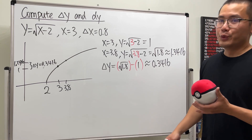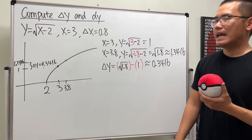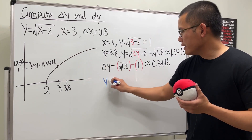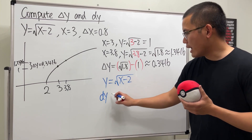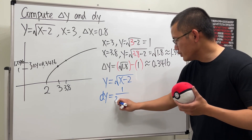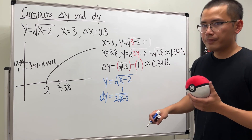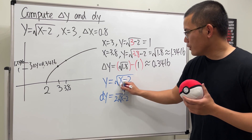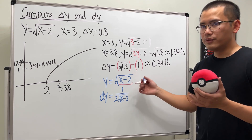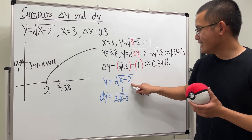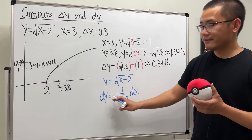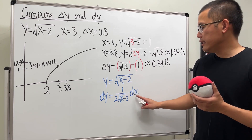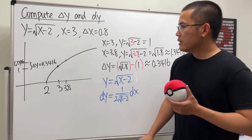Now suppose we don't have a calculator — we use dy as an approximation. For y = √(x - 2), the derivative is 1 / (2√(x - 2)). The chain rule applies, but the derivative of the inside is 1, so it doesn't change anything. The differential formula gives us dy = [1 / (2√(x - 2))] dx.